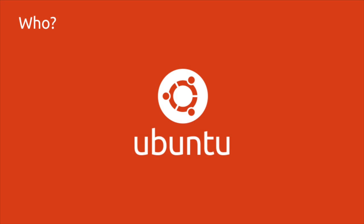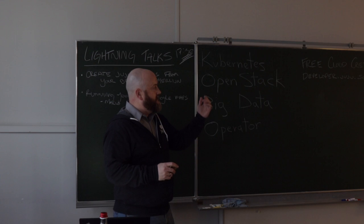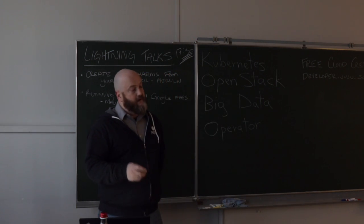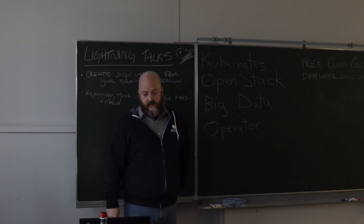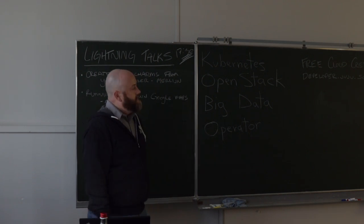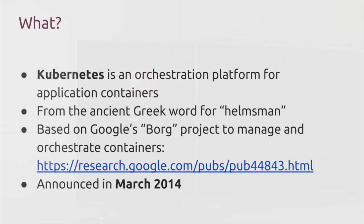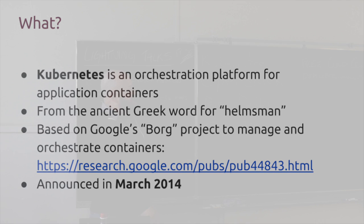Who are we? I work for Canonical. This is the official way to deploy Kubernetes on Ubuntu. Kubernetes is a mechanism to deploy, update, manage, and scale your application containers. It comes from the Greek word helmsman. I'm hoping that if you're here, you've kind of already heard of this before, but if you haven't, you can read the Google Borg paper. There's a link there. It was basically announced in March of 2014.